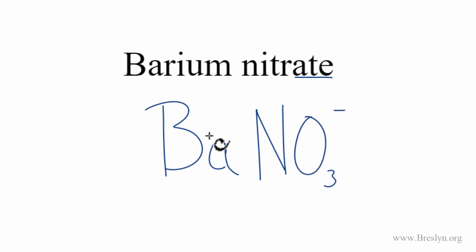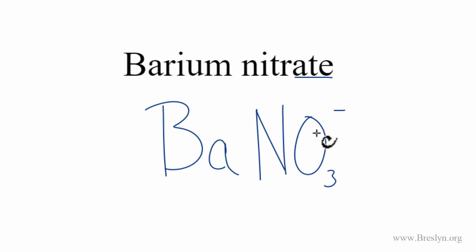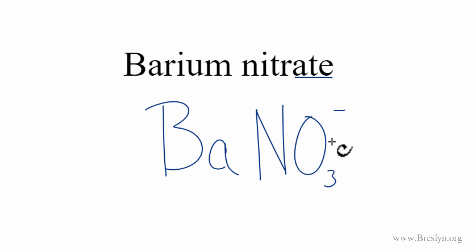Barium is a metal, and the nitrate is made up of a group of non-metals. So metal and non-metal means ionic compound, and we need to take into account the charges. We know that the nitrate, NO₃, has a charge of minus 1.